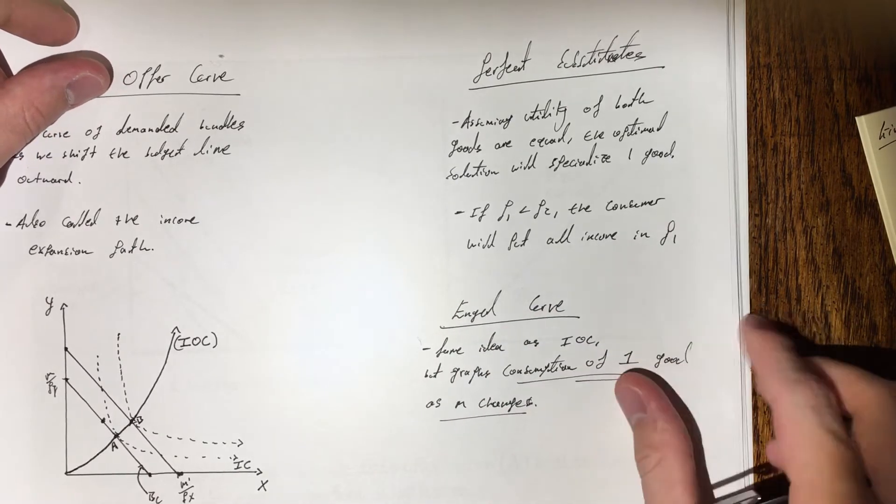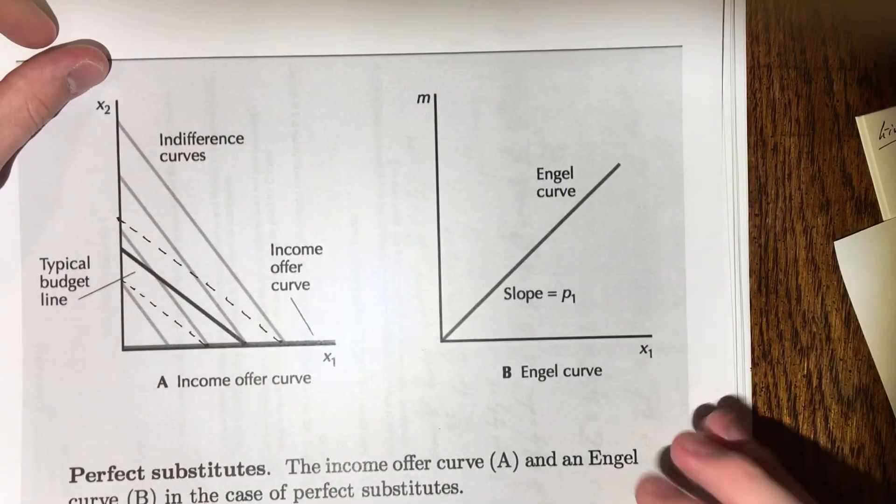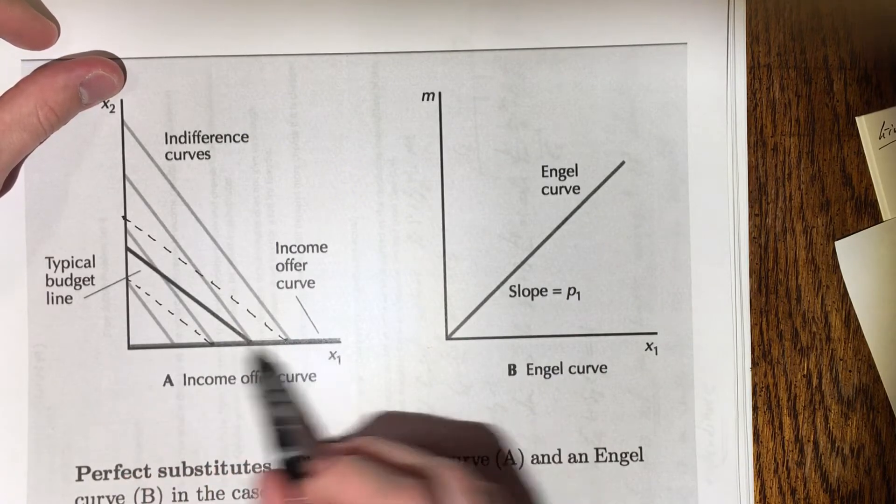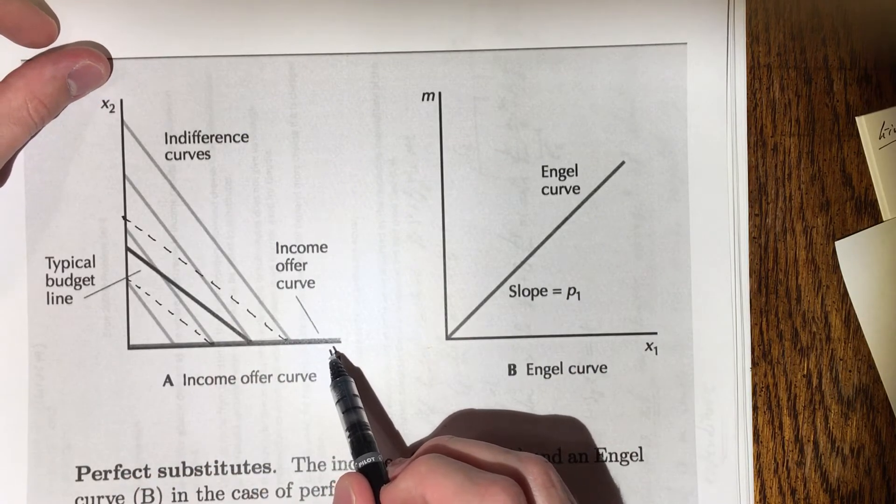So I'll start with our income offer curve, which is here on the left. It's the x-axis, and I'll explain why that is.